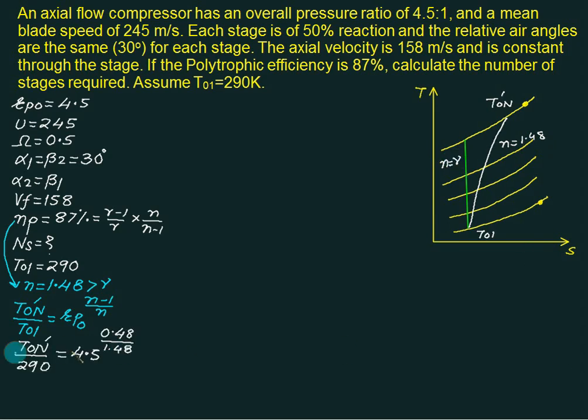We have T0n dash divided by T01. This one is 290. Rp overall is 4.5 and value of n minus 1 is 0.48, value of n is 1.48. We can get value of T0n dash. We obtain this temperature at the end of the 10th stage. The actual temperature is 472.33 Kelvin.